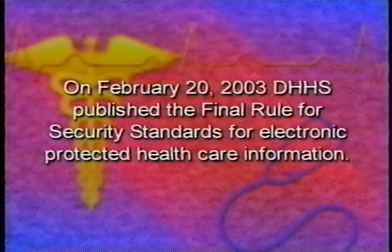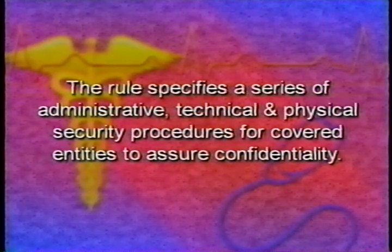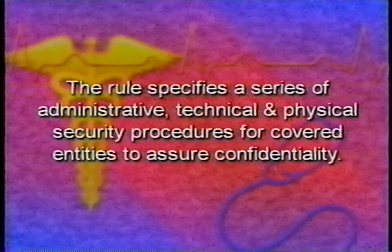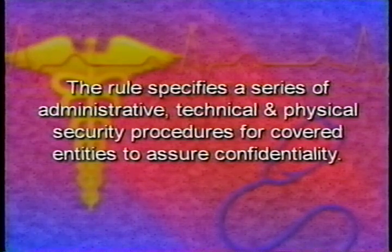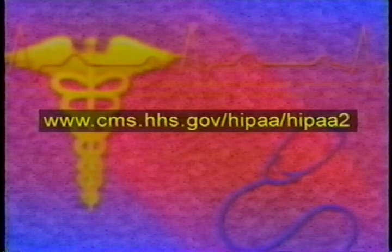On February 20, 2003, the Department of Health and Human Services published the final rule for security standards for electronic protected health care information. This rule specifies a series of administrative, technical, and physical security procedures for covered entities to assure the confidentiality of electronic protected health information. The security compliance dates are April 21, 2005, and April 21, 2006 for small health plans. Please visit the CMS website at www.cms.hhs.gov/hipaa/hipaa2 for current information about security.